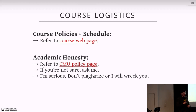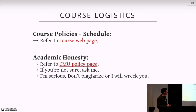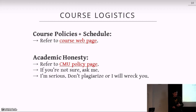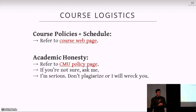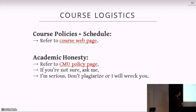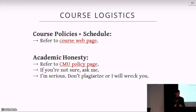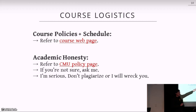Now, course logistics. All the course policies, schedule, reading list, and syllabus are on the course website at 15721.courses.cs.cmu.edu. I want to stress multiple times: if you're not familiar with CMU's academic policy about cheating, plagiarism, and stealing, you need to go read this. The systems faculty at CMU are cracking down this semester — we're not going to be dealing with people plagiarizing and cheating anymore.